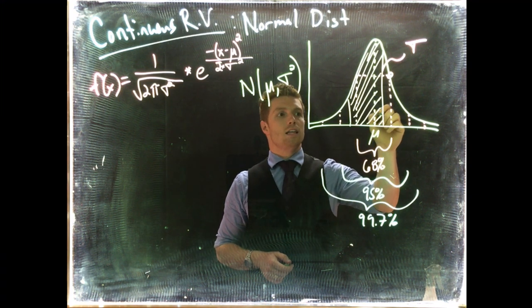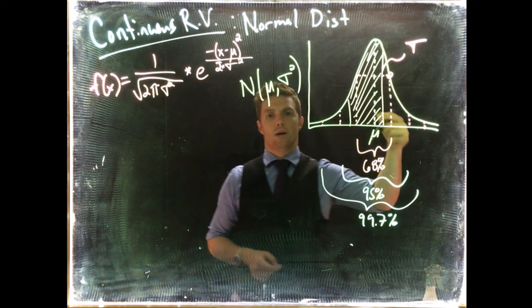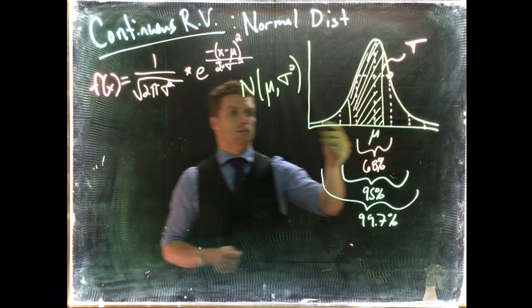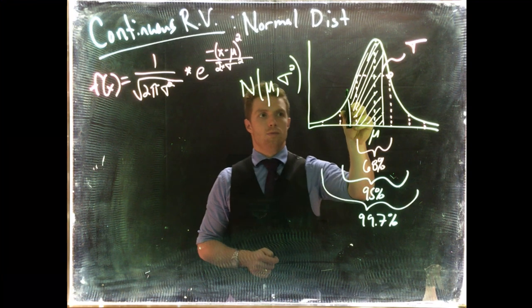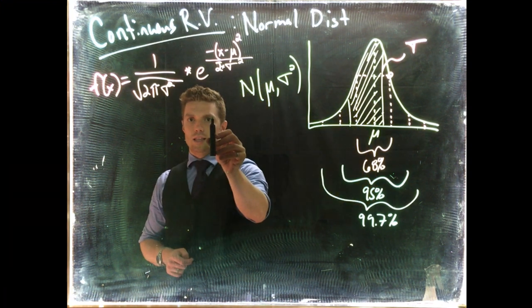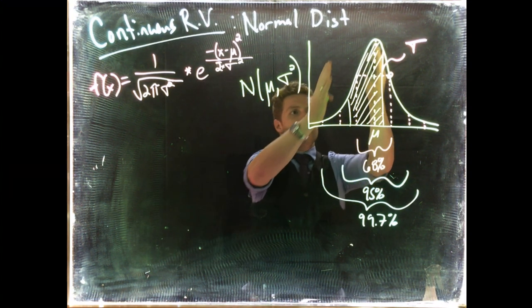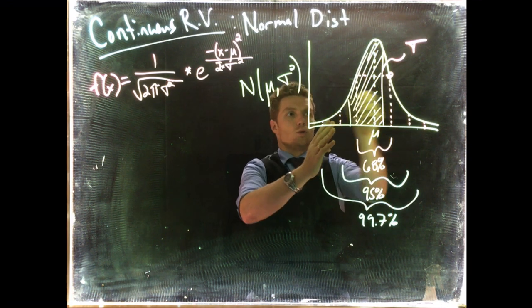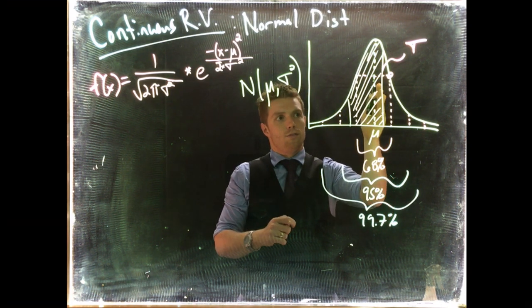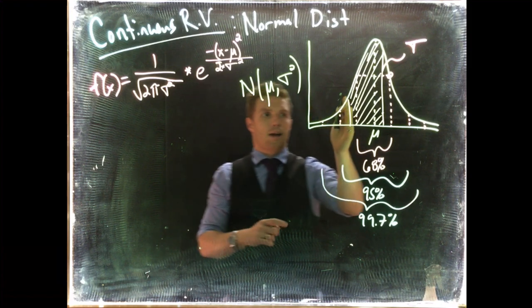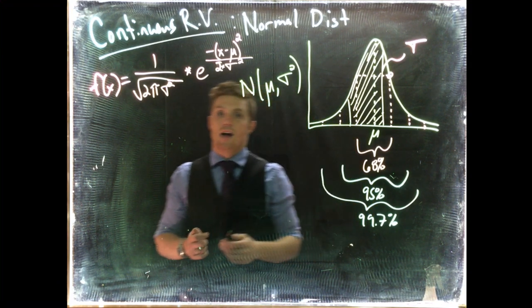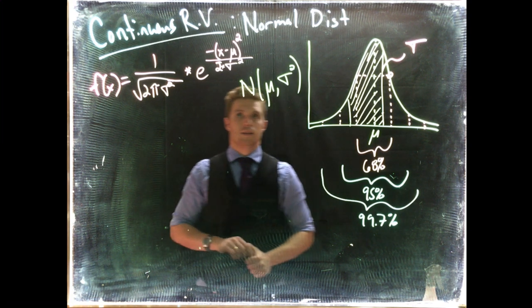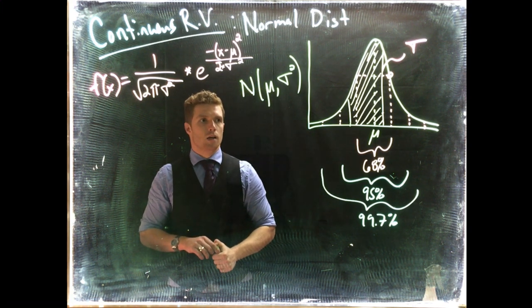We can look at this value and the CDF would get the probability from this point and everything to the left. Same thing over here. To find the probability of being between these two points, take the probability from here to the left, subtract the probability from here to the left, and that would give us the probability that we are looking for.